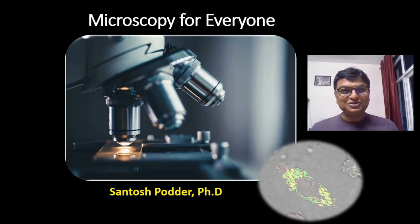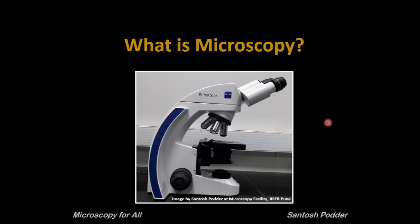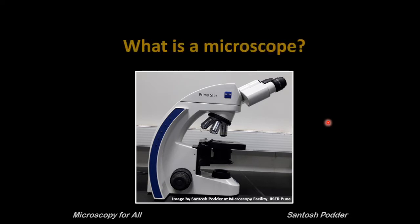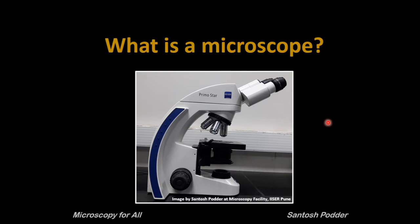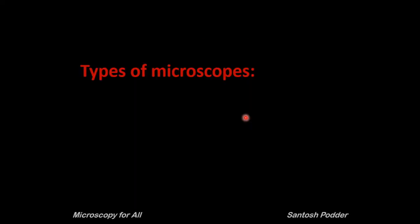Hi everyone, this is Shantosh and you are watching my YouTube channel Microscopy for All. Microscopy is the act of using a microscope to view tiny things that cannot be seen with the unaided eyes. You already learned that a microscope is an optical instrument consisting of a lens or combination of lenses for making an enlarged or magnified image of a minute object. But do you know that there are other types of microscopes available — so powerful that we can see objects in nanometers? Let's talk about different types of microscopes in brief.